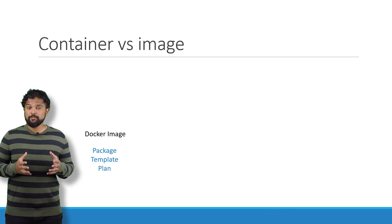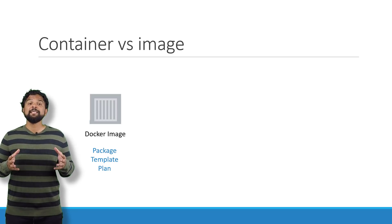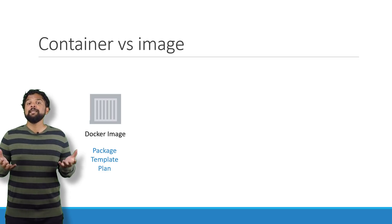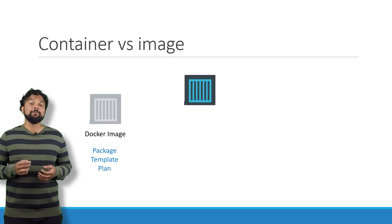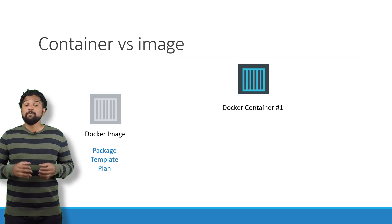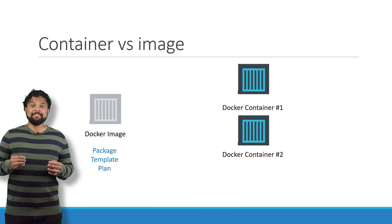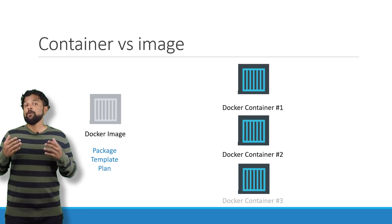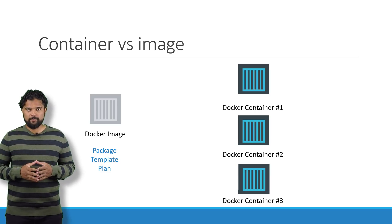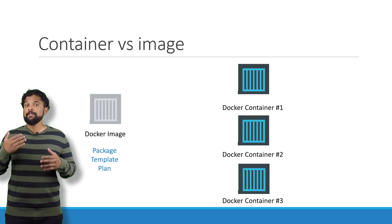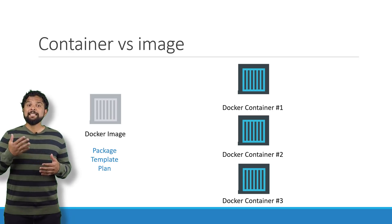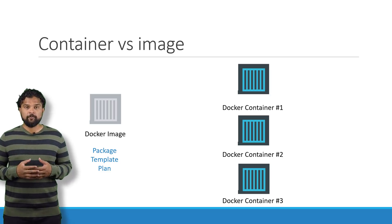We've been talking about images and containers — let's understand the difference between the two. An image is a package or a template, just like a VM template that you might have worked with in the virtualization world. It is used to create one or more containers. Containers are running instances of images that are isolated and have their own environments and set of processes. In case you cannot find what you're looking for, you could create an image yourself and push it to the Docker Hub repository, making it available for the public.